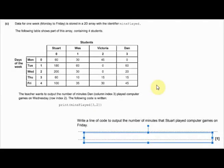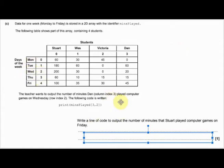We have another 2D array question here. It's been put into a matrix, and you must make sure you read all of the information. It says: data for week one, Monday to Friday, is stored in a 2D array with the identifier mins_played. The following table shows part of this array containing four students. The teacher wants to output the number of minutes Dan, in column index 3, played computer games on Wednesday, which is row index 2. The following code is written: print mins_played[3][2].